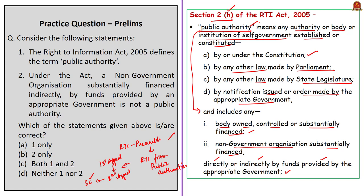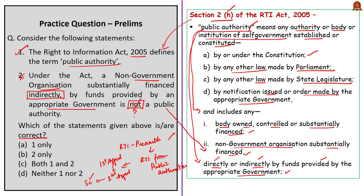Looking at the practice question: Statement 1 says the RTI Act of 2005 defines the term 'public authority' — this is correct, as Section 2(h) defines it. Statement 2 says that under the act, a non-government organization substantially financed indirectly by funds provided by an appropriate government is not a public authority — this statement is incorrect, because we saw that any NGO substantially financed either directly or indirectly by the appropriate government is also a public authority. Hence the correct answer is option A — statement 1 only.